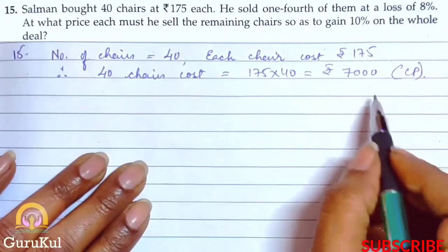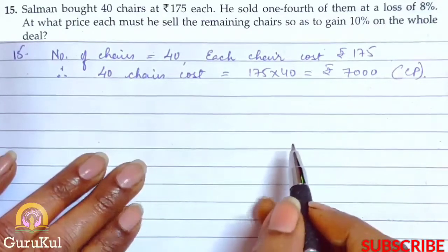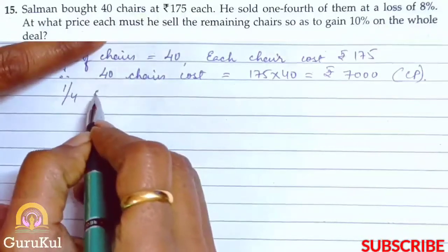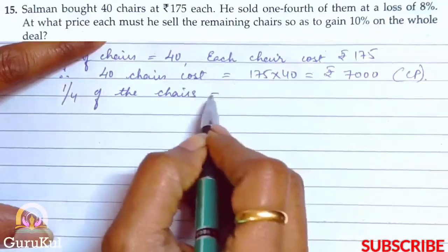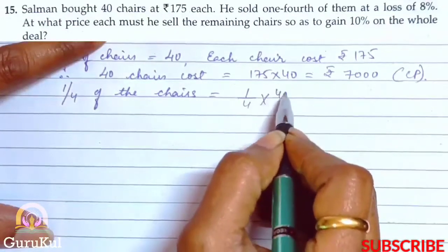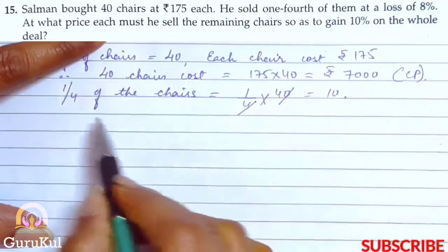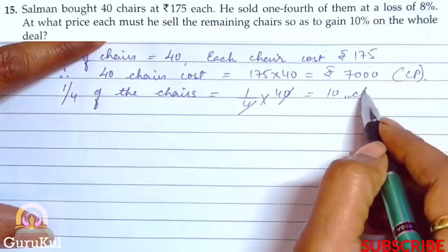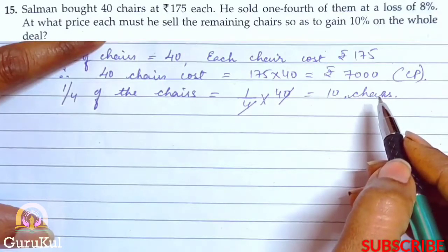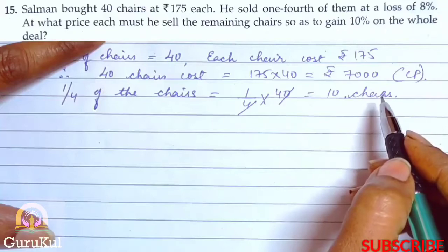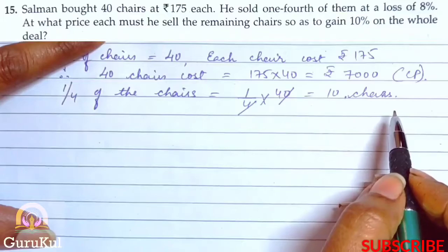The next part says he sold one fourth of the chairs. One fourth of 40 chairs = 10 chairs. So he sold 10 chairs at a loss of 8%.